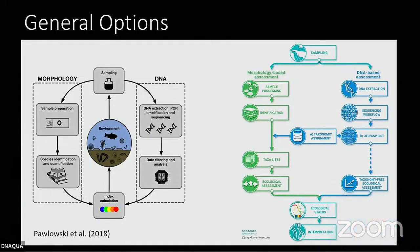In general there are two ways to proceed. On the left is the traditional assessment; on the right are DNA-based options. Option one: you do DNA extraction, you sequence, and then get OTU lists — Operational Taxonomic Units — which need taxonomy through taxonomic assignment, and then you can proceed. There's also a second option — so-called taxonomy-free — which is not truly taxonomy-free but uses all additional taxa not yet discovered or lacking formal species names. These may have important bioindication value, but this approach needs rigorous calibration and will take more time.